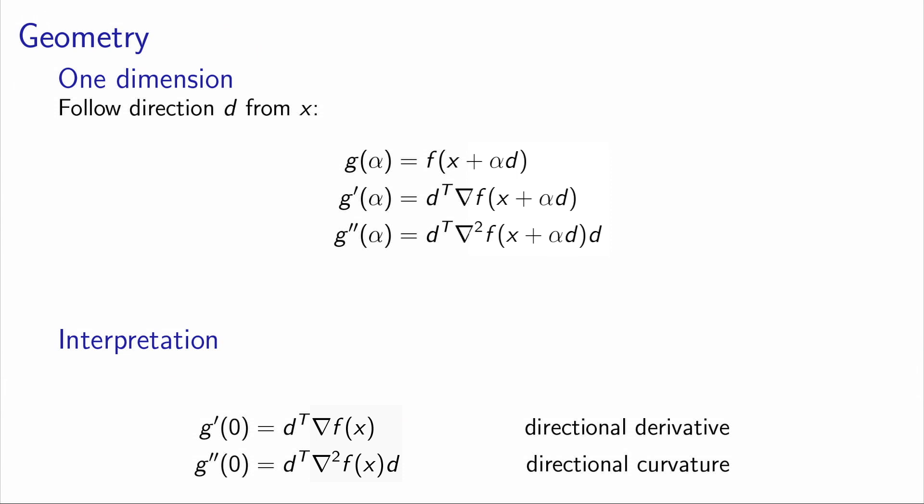So in this case, if we are at a point x and if we follow a direction d with a step alpha, we can reduce the problem to one dimension, which would be the value of alpha. So if x and d are given, we can define a unidimensional function g of alpha, which is equal to f of x plus alpha d. The derivative of this function will simply be the directional derivative of the function at x plus alpha d. And if you calculate the second derivative, it is evaluated at x plus alpha d times d.